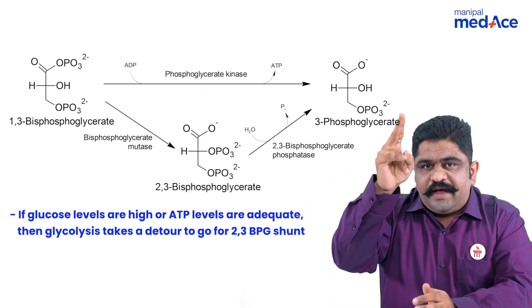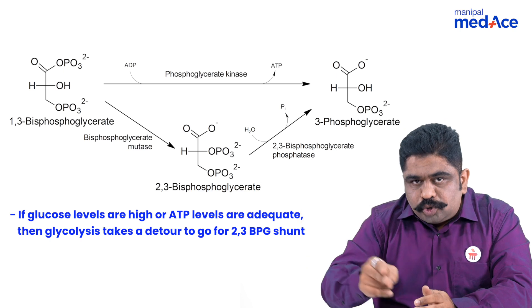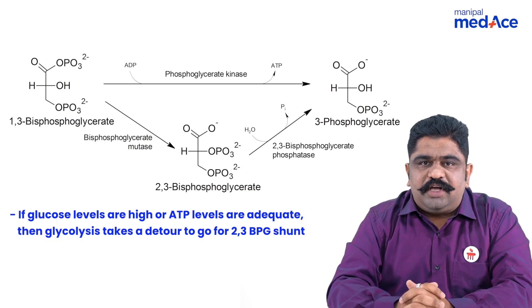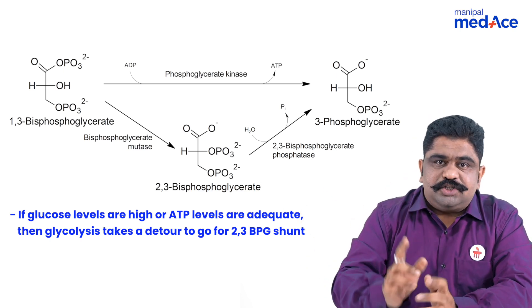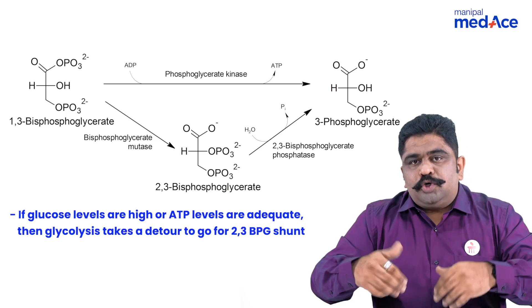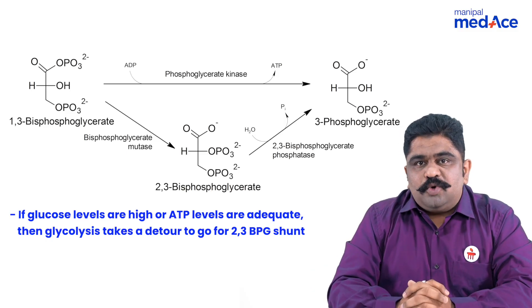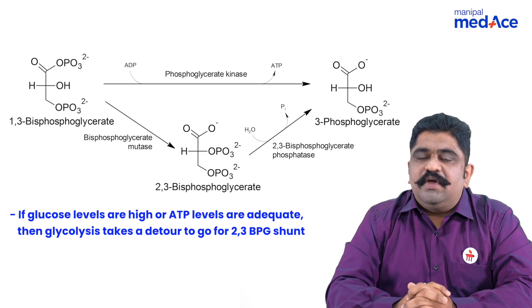Remember, every time glycolysis goes through 2,3-BPG and comes back to form pyruvate, there will always be a deficiency of 1 ATP. It means to form the 2,3-BPG, you have to sacrifice 1 ATP.